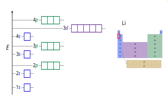We'll start with lithium as an example. Lithium has the electron configuration 1s² 2s¹. The electrons fill into the subshells starting at the lowest energy. We can have up to two electrons per orbital, so the first electron goes into the 1s orbital and the second electron also goes into the 1s orbital but with opposite spin.